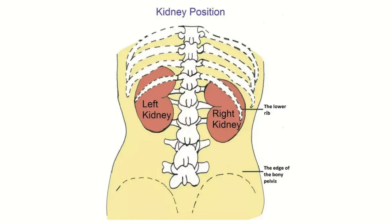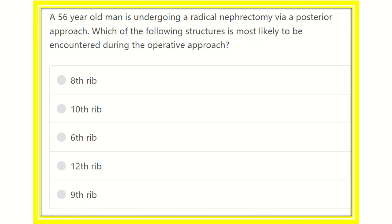Hello everyone, welcome to another question and answer session for the MRCS exam. The question: a 56-year-old man is undergoing a radical nephrectomy via a posterior approach. Which of the following structures is most likely to be encountered during the operative approach?